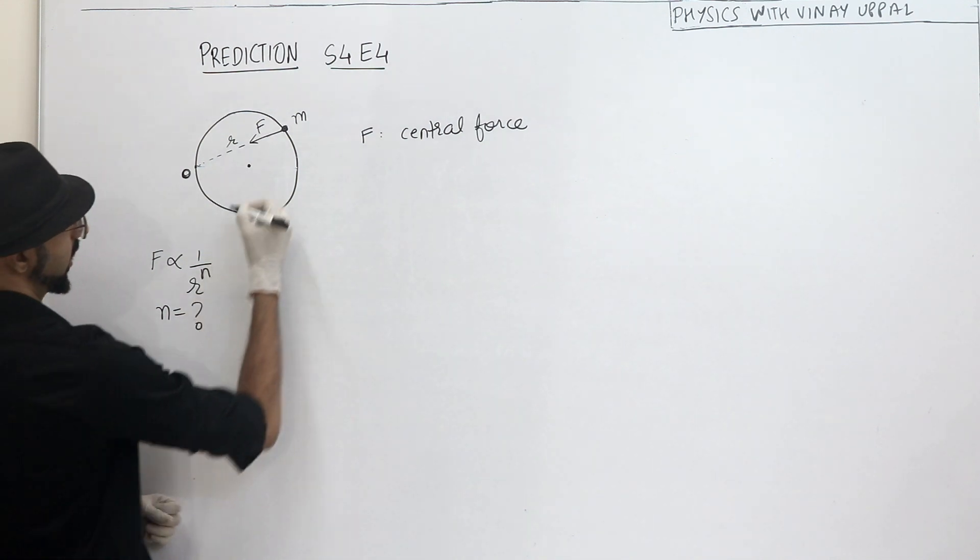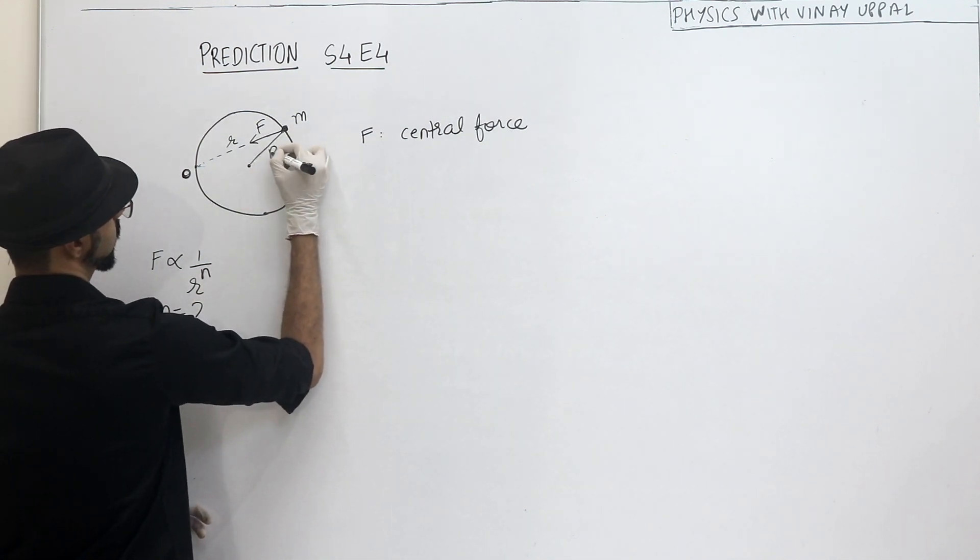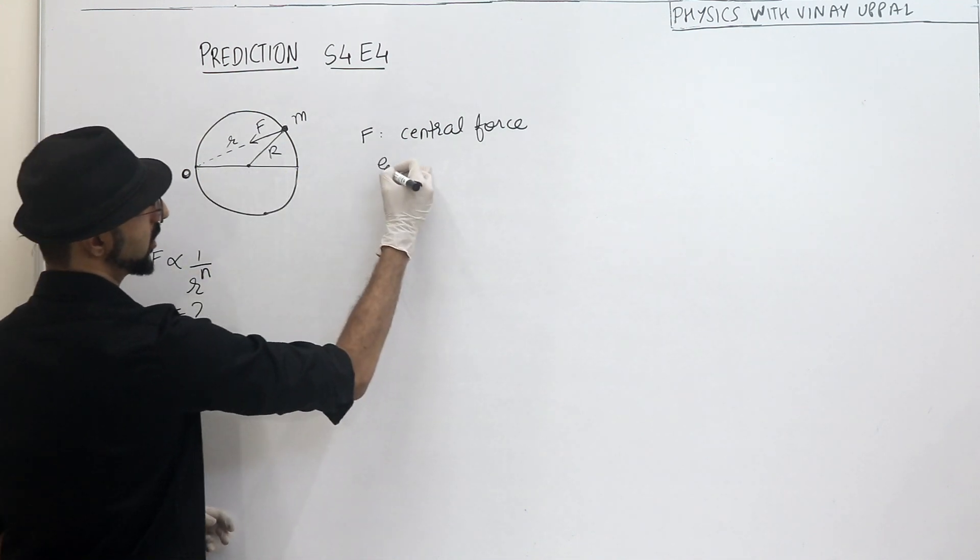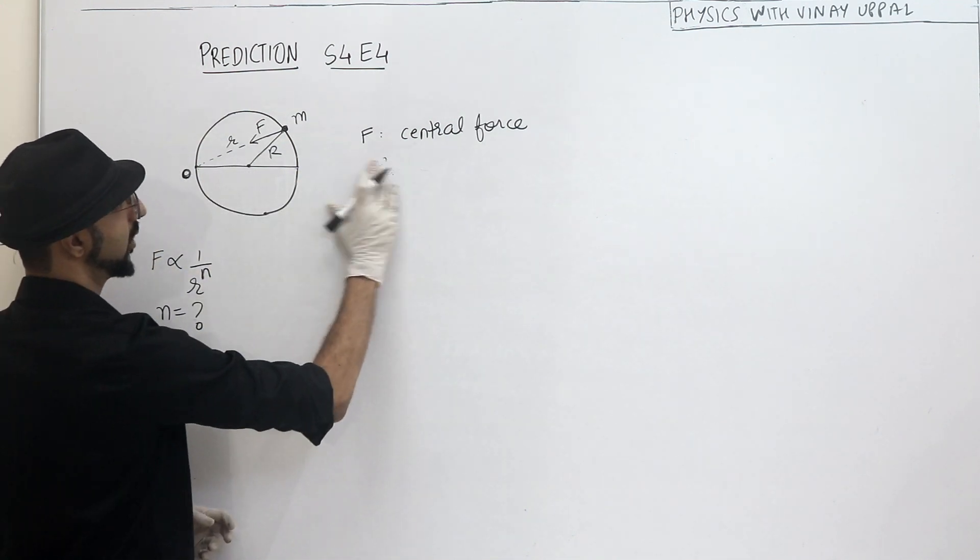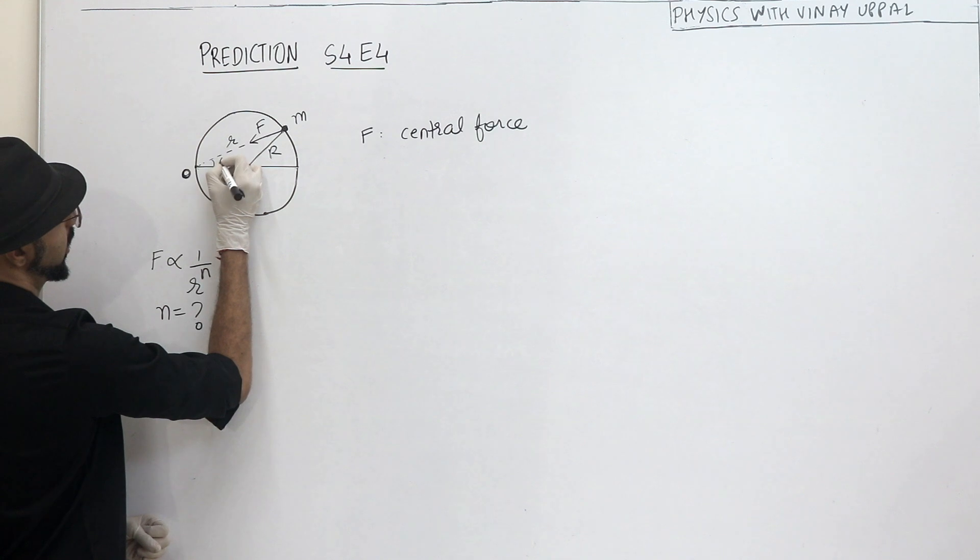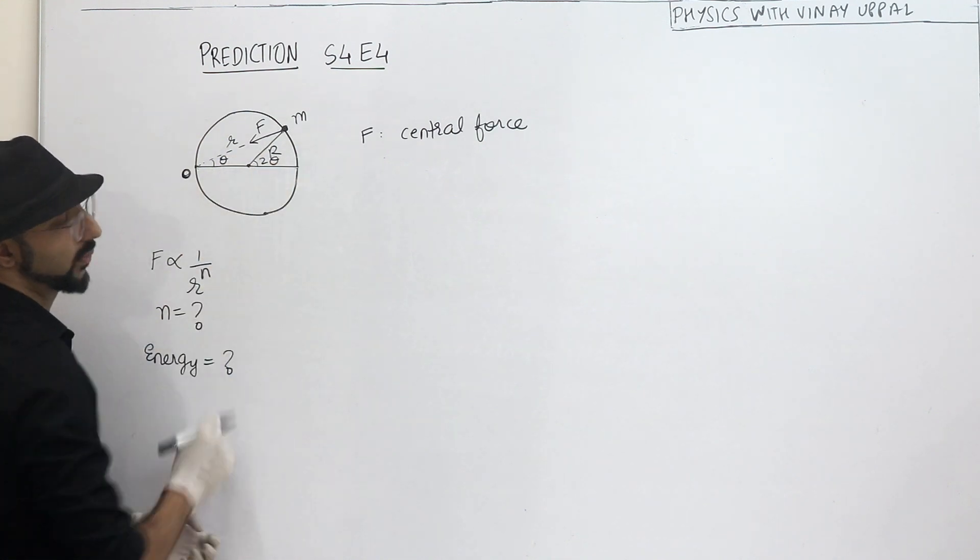So let's say this radius is r. And we will also calculate the energy of the orbit. So let's say this angle is theta. So this will be 2 theta. Of course, we know that.